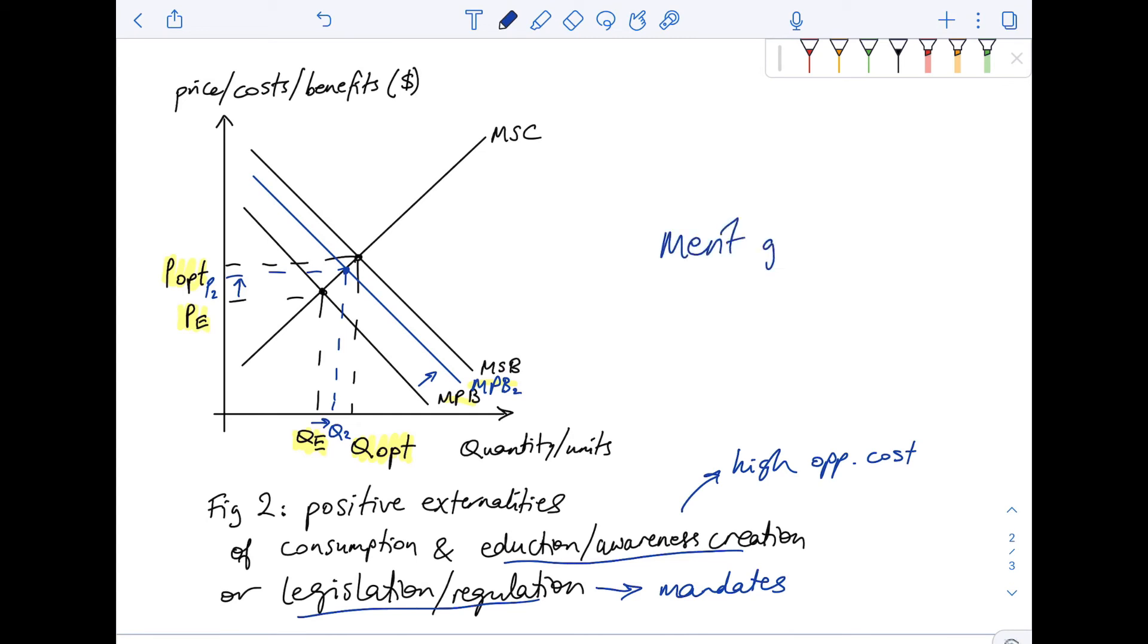Which in the case of positive externalities of consumption, it's often a merit good, like schools, or vaccines, and so on.